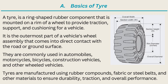A tire is a ring-shaped rubber component that is mounted on a rim of a wheel to provide traction, support, and cushioning for a vehicle. It is the outermost part of a vehicle's wheel assembly that comes into direct contact with the road or ground surface. They are commonly used in automobiles, motorcycles, bicycles, construction vehicles, and other wheeled vehicles. Tires are manufactured using rubber compounds, fabric or steel belts, and other materials to ensure durability, traction, and overall performance.